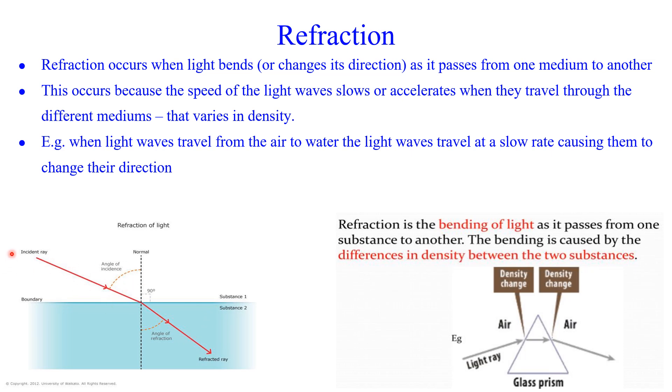If we look at this image here, we've got an incident ray traveling through air where the particles are more spread out, less dense. Then we go into water, a liquid, and those particles are more dense. This slows down the frequency of the refracted ray and so it bends towards the normal.